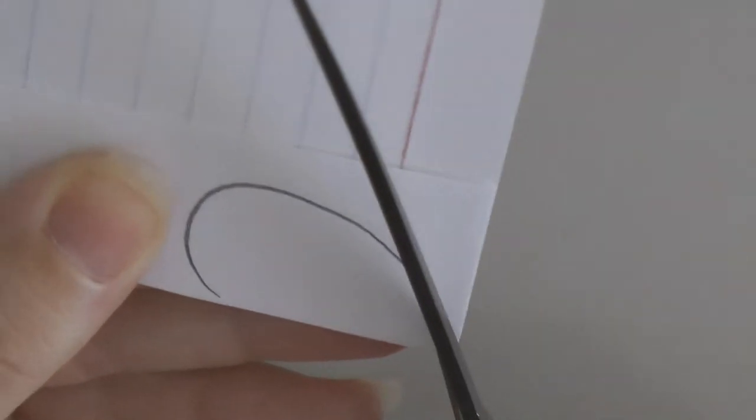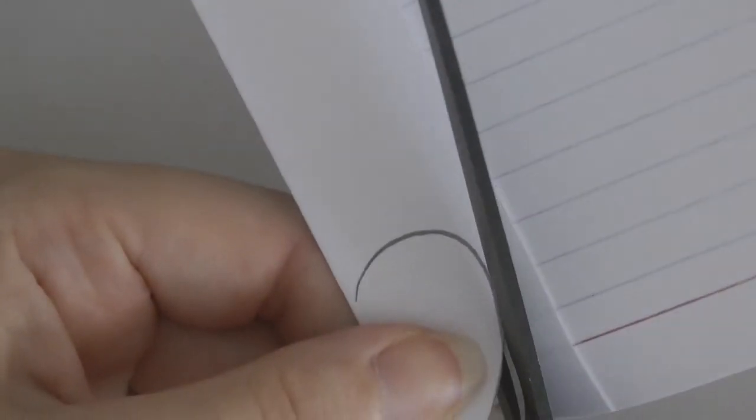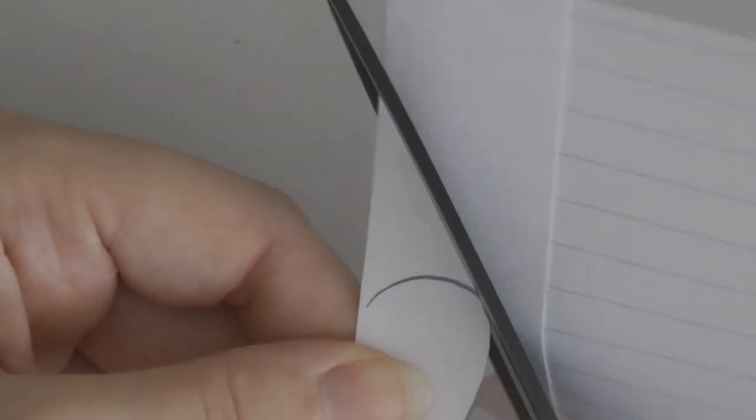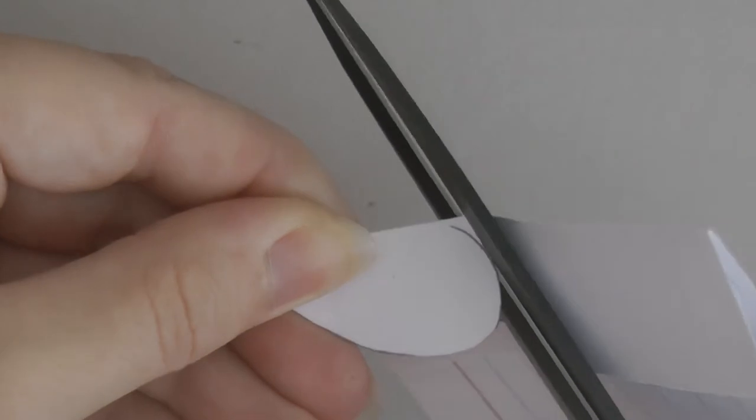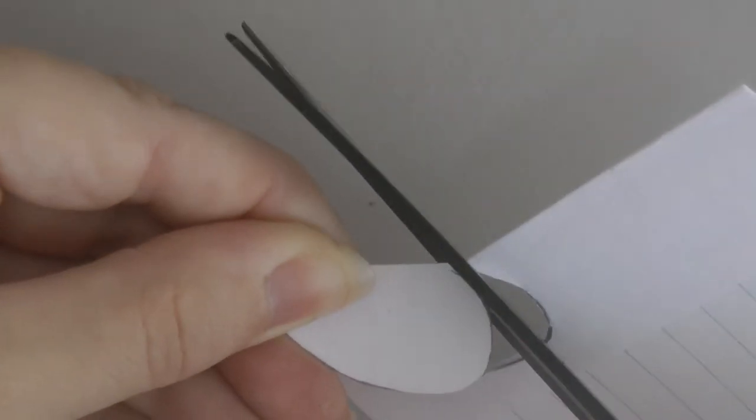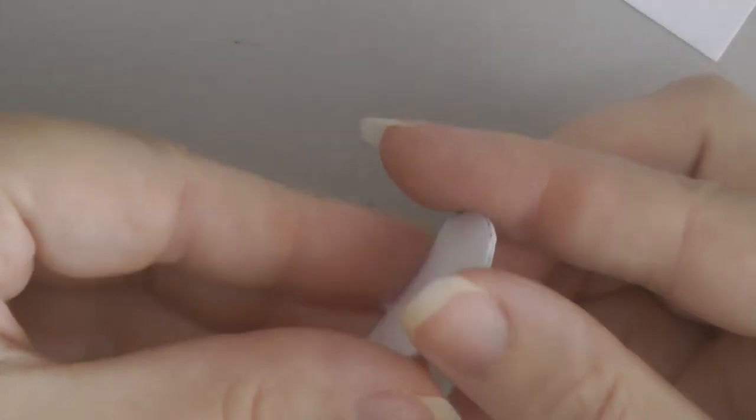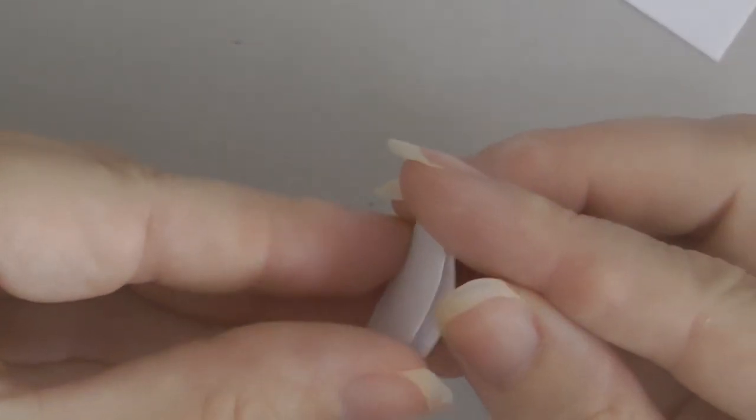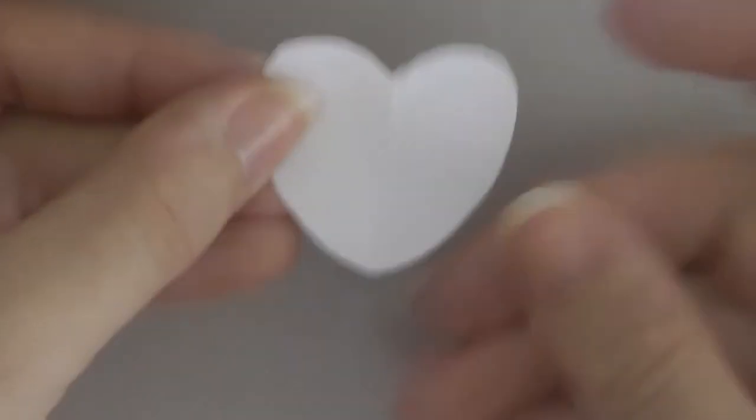I did not have an appropriately sized heart die or punch, so I am making one of my own, which is the first way that I am modifying this. She used a punch. You just cut around, fold your index card over and cut around, and when you open it up, you have a symmetrical heart.